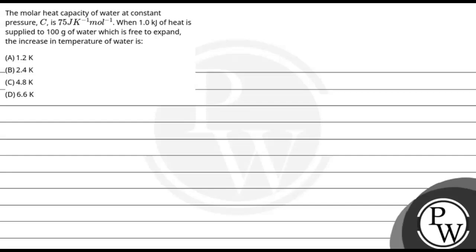Hello, let's read the question. The molar heat capacity of water at constant pressure is 75 joules per Kelvin per mole. When 1 kJ of heat is supplied to 100 g of water, which is free to expand, the increase in temperature of water is 1.2 Kelvin, 2.4, 4.8 or 6.6 Kelvin.